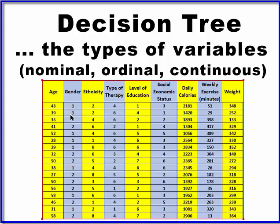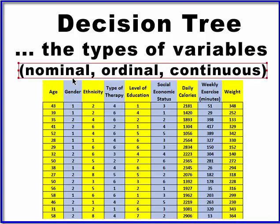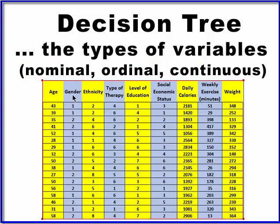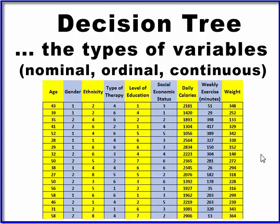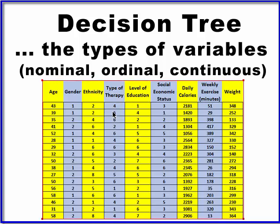Gender is nominal — categorical, it puts people in one group or the other, it's a grouping variable. Ethnicity is the same thing — it's nominal. It puts people in one and only one group: one, white; two, African-American; three, Hispanic; four, Asian-American, et cetera, where a number means a group, not a number. Type of therapy is also nominal: one could be CBT, two could be biofeedback, et cetera. A number is actually the name of a category, and for SPSS purposes we put numbers to represent specific values.